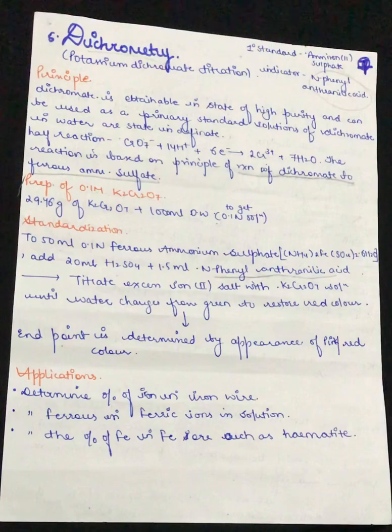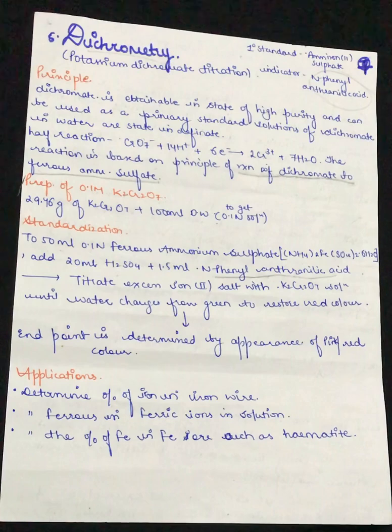In this case, we have to remember that we are reacting potassium dichromate with ferrous ammonium sulfate. We are using N-phenyl anthranilic acid as an indicator, and the color change from green solution to red color when we add indicator will signify the end point.